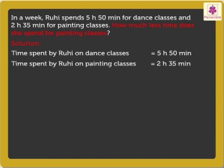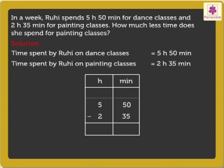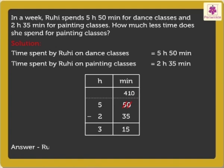To find out how much less time she spends for painting classes, we subtract 2 Hours 35 Minutes from 5 Hours 50 Minutes. Firstly, subtract the minutes and then the hours. Thus, we get the answer as 3 Hours 15 Minutes. Rohi spent 3 Hours 15 Minutes less on her painting classes.